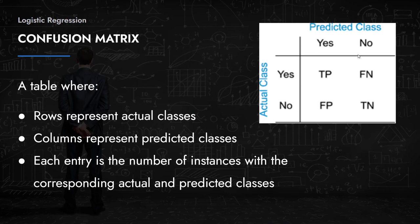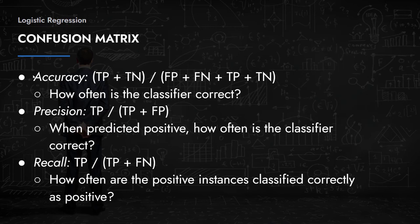It's very important to understand the confusion matrix as it helps you correctly evaluate your classifier's performance. It all depends on the problem: in the cancer case, you clearly want the false negative to be zero and the true positive rate to be high. Whenever you build a classification model, print out the confusion matrix and understand where its strengths and weaknesses lie.